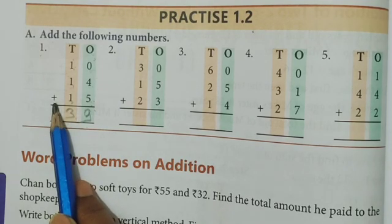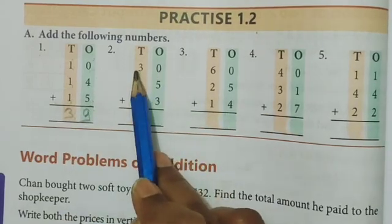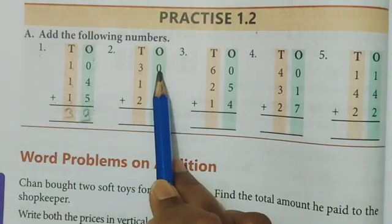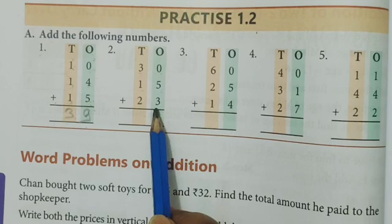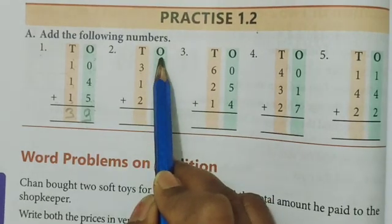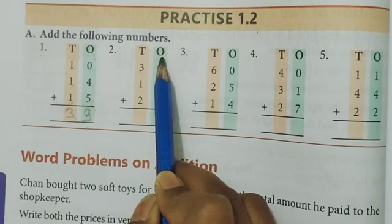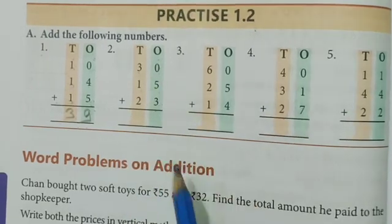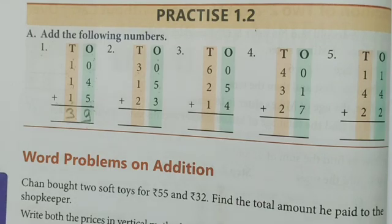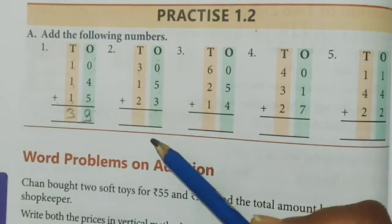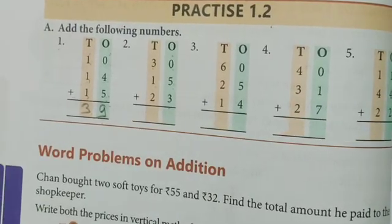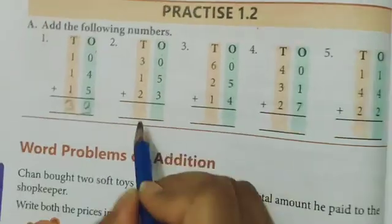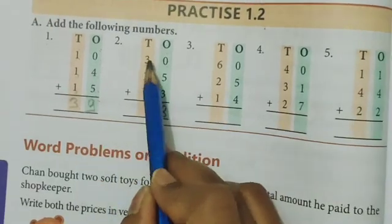Now see here the numbers. Read this number: 30, 15, and 23. We will solve them. First column? Ones column. 0 plus 5, 5. And 5 plus 3, 5 ke aage 3 fingers count karo, 8. That means ones ka answer is 8.